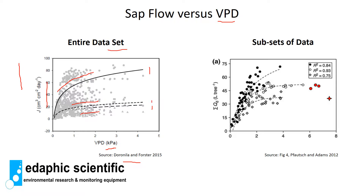You can look at this over an entire dataset or subsets. Faust and Adams in 2012 looked at the relationship between sap flow and VPD at different parts of the growing season, applying logistic curves and finding that the relationship changes over the season. However, this has been done in just about every paper and the relationship is well known — it's really time to move beyond a simple logistic regression and delve into the sap flow and VPD data in more detail.